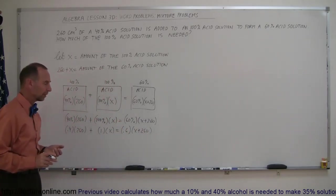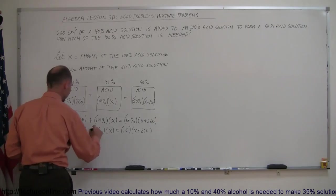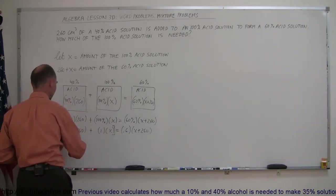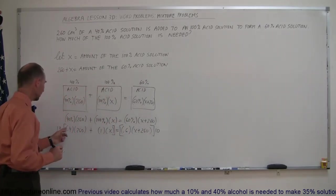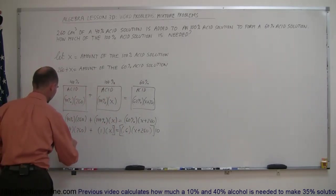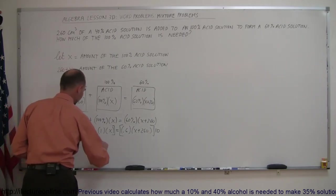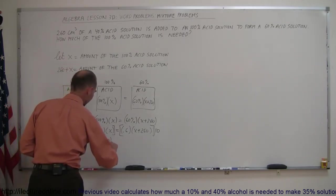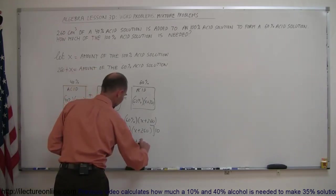Now to get rid of the decimal places, we can multiply both sides of the equation by 10. Multiply the left side by 10, multiply the right side by 10. So 10 times 0.4 is 4, so 4 times 260, plus 10 times 1 is 10 times X, equals 10 times 0.6 which is 6 times X plus 260.